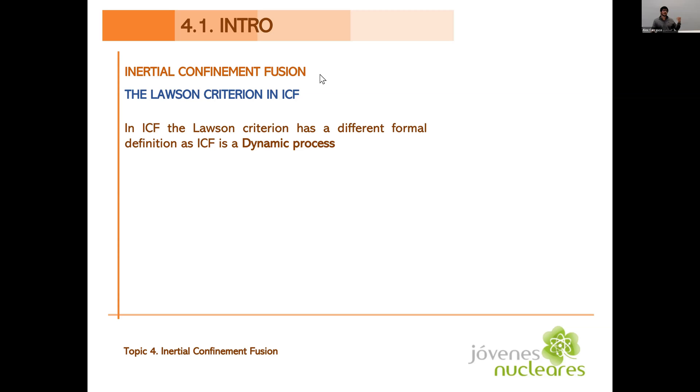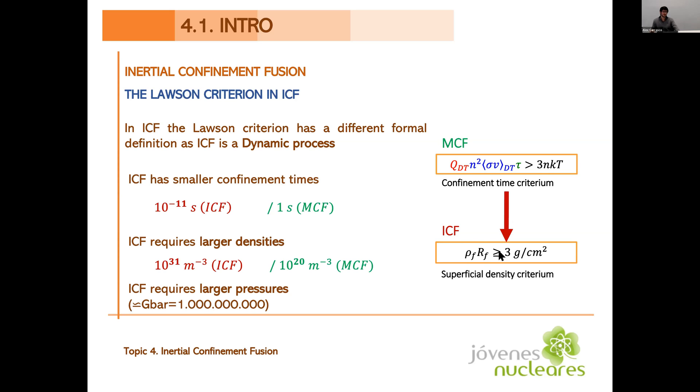So, for the last part of the introduction, as Enrique discussed, the Lawson criteria in magnetic confinement fusion, we will discuss it in inertial confinement fusion. The main difference is that it has a different formal definition, because this is a dynamic process. What does this mean? That in magnetic confinement fusion, there's a time criterion to fulfill, and in inertial confinement fusion, the criterion is of superficial density. So, we have to obtain a certain density in a certain area to confine the plasma. This is the way in which the Lawson criterion would be expressed in inertial confinement fusion. So, this results in the fact that inertial confinement fusion has smaller confinement times than magnetic confinement fusion. It requires larger densities, and it also requires larger pressures, up to one gigibar, which is 1,000 million times the atmospheric pressure.